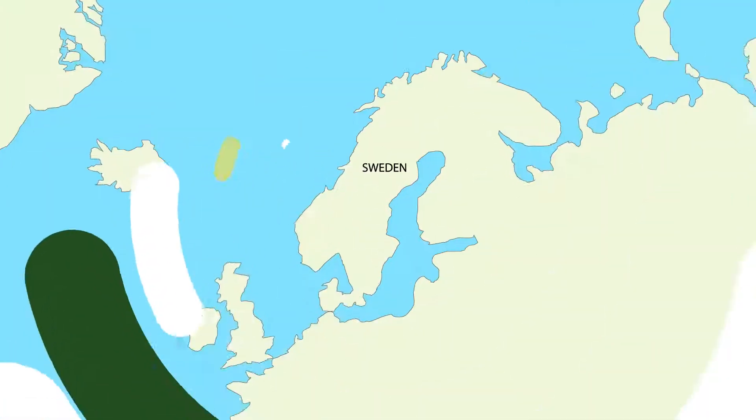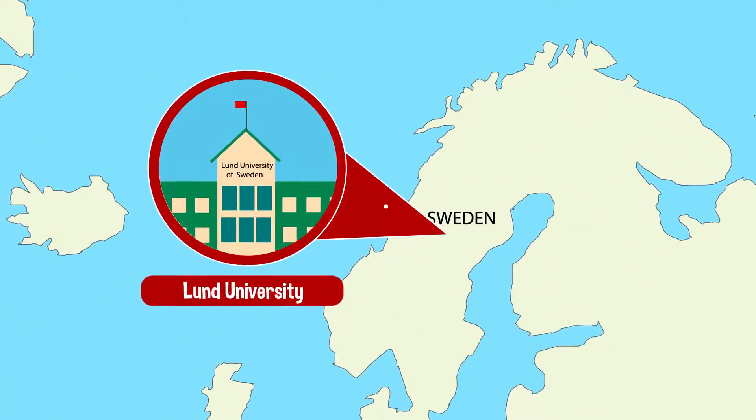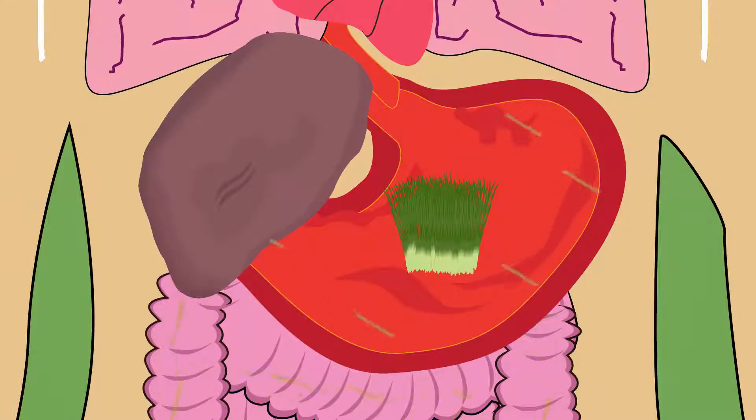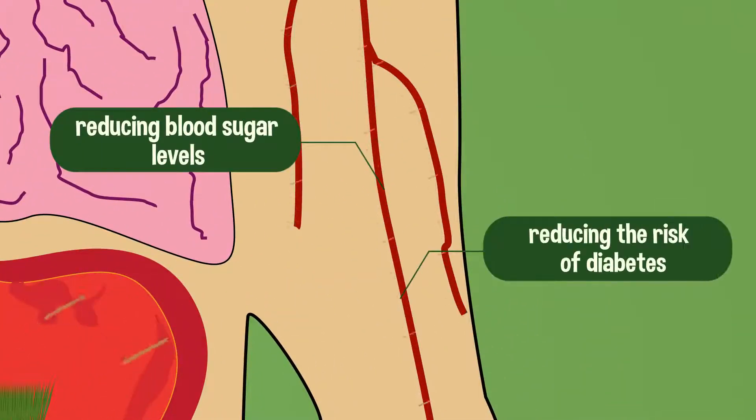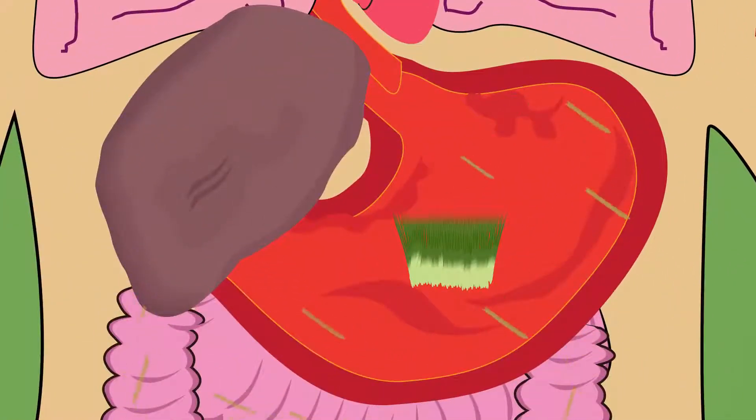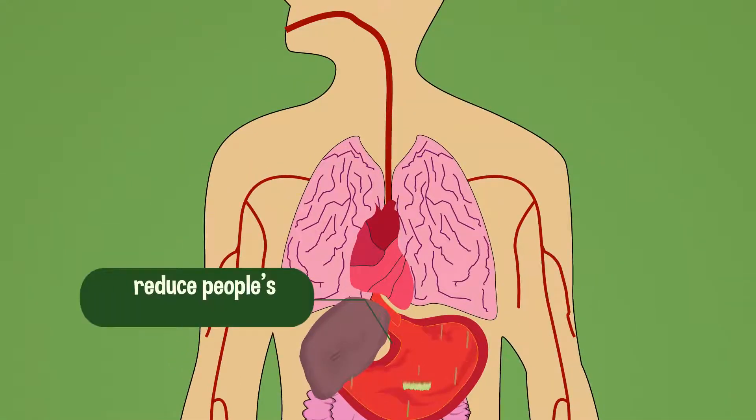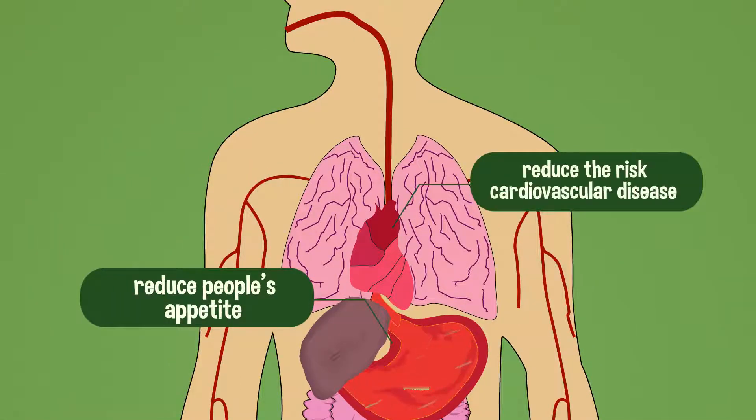Also, a recent study from the Lund University in Sweden shows that barley can rapidly improve people's health by reducing blood sugar levels and the risk for diabetes. The secret lies in the special mixture of dietary fibers found in barley, which can also help reduce people's appetite and risk for cardiovascular disease.